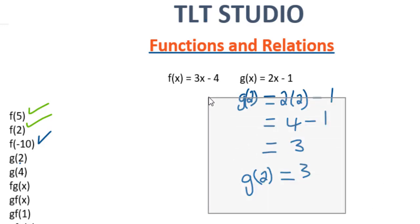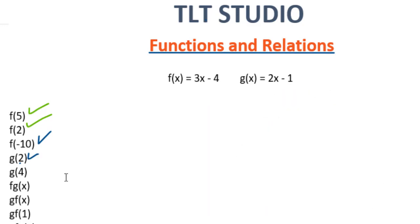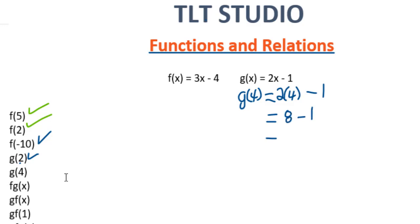Let us try another one. We have the function g of 4. So we have g of 4 equal 2 multiplied by 4 minus 1. We substitute the value of 4 anywhere we see x in the function. This gives us 8 minus 1, which is equal to 7. So g of 4 is equal to 7.